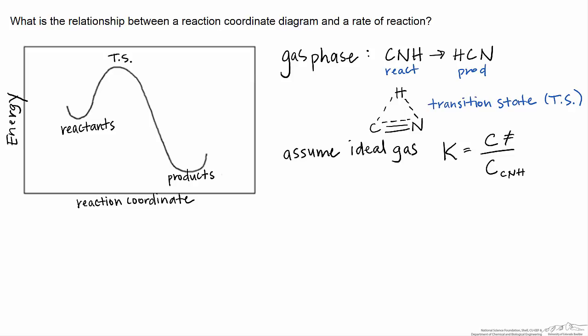But the second derivative has a different sign. Here we have a maximum instead of a minimum, and so we don't expect rigorously that an equilibrium relationship will necessarily apply, but we're going to use it as a model, and it has been used effectively, this kind of equilibrium relationship, in order to predict reaction rates.